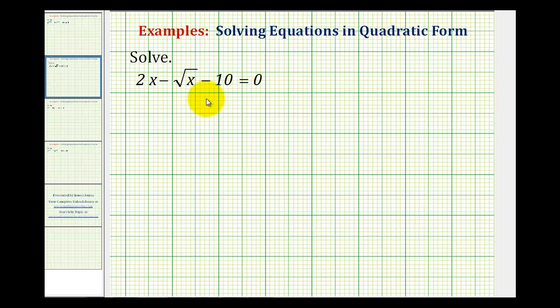We want to solve the given equation by writing it in quadratic form and then solve by factoring. For this equation, we want to write it in the form of 2u² - u - 10 = 0.